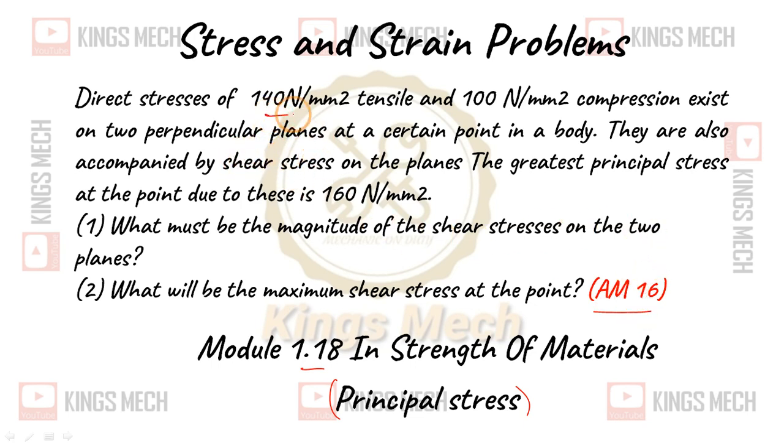The direct stress of 140 N per mm square tensile (positive) and 100 N per mm square compression (negative) exist on two perpendicular planes at a certain point in a body. They are also accompanied by shear stress on the planes. The greatest principal stress at the point due to these is 160 N per mm square.